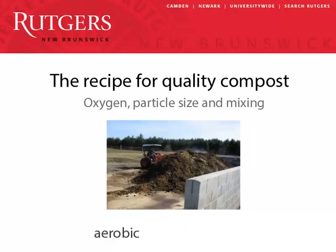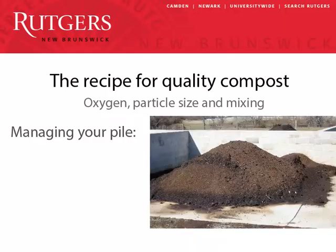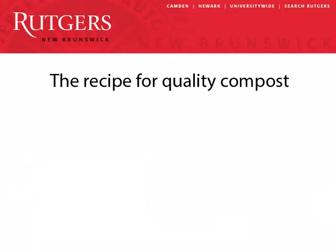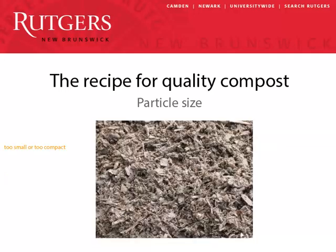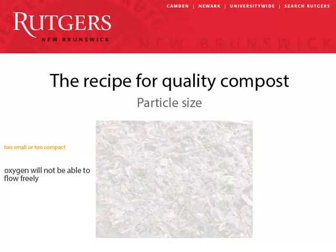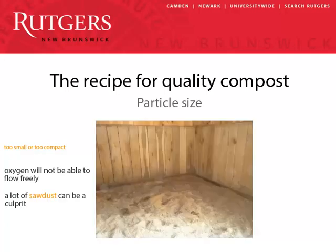Composting is an aerobic process, meaning it requires oxygen. You provide it by managing three main variables: the size of the particles in the pile, the size of the pile itself, and turning or aerating your pile. Proper particle size helps oxygen flow into and through your compost pile. If particles are too small or too compacted, there won't be enough space between them for oxygen to flow adequately. That can happen if you're composting bedding materials with a lot of sawdust.